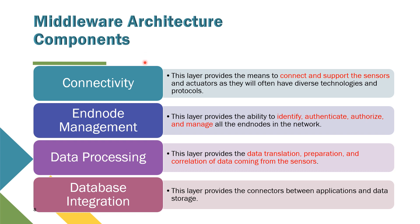Let us look into the first four components. The first one is connectivity — this layer provides the means to connect and support the sensors and actuators as they will often have diverse technologies and protocols. This middleware is supposed to be able to connect all of the end-nodes together so that it can be functional. Then end-node management — this layer will provide the ability to identify, authenticate, authorize, and manage all the end-nodes in the network. For example, when using a bank account, it should be able to identify who the user is and then authenticate them.